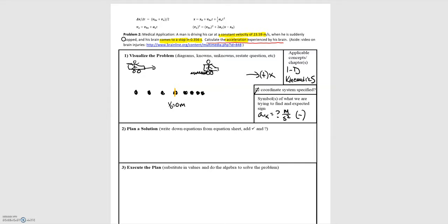So we know that that velocity must still be the same. So the initial velocity is equal to 23.59 meters per second.